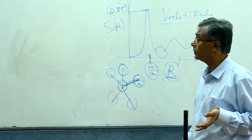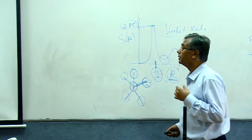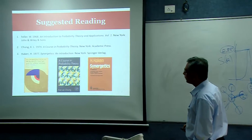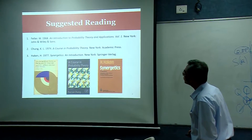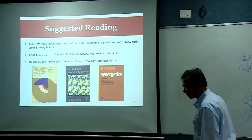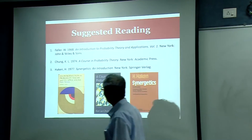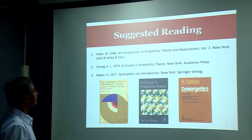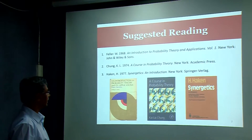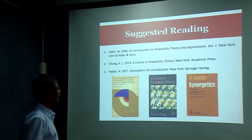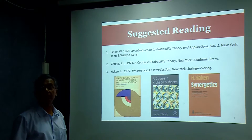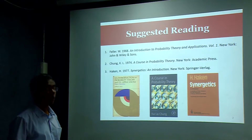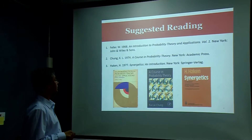A random event has an outcome. The collection of all outcomes of a random event is called the sample space. If you toss a coin and know it was heads, the next toss is not influenced — we call this an uncorrelated event. Sample space for tossing a coin is {H, T}; for throwing a die it is {1, 2, 3, 4, 5, 6}. Given the sample space, the measure of the sample space is called omega.